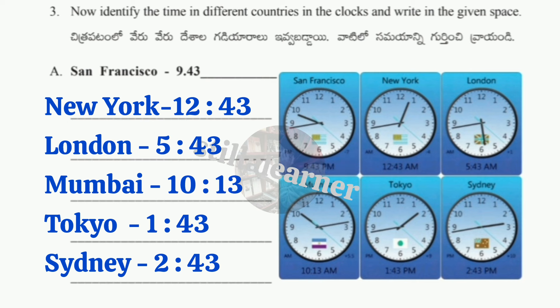Continuing the world clock times: Tokyo: 1:43. Sydney: 2:43. Moving on to Worksheet number six, with the concept of Rotation and Revolution.